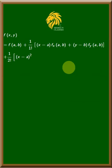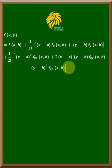into f double x of AB plus 2 into x minus a into y minus b into fxy of AB plus y minus b the whole square into f double y of AB